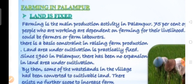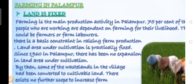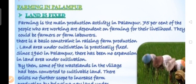Only a small part of the land is used for cultivation and it is fixed — we cannot increase it. Farming is the main production activity in Palampur; 75% of the people depend on farming for their livelihood. There is a basic constraint: the land area under cultivation is practically fixed. Since 1960, there has been no expansion in land area under cultivation in Palampur.